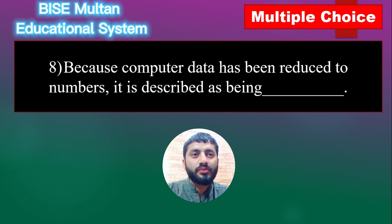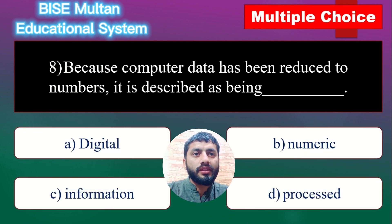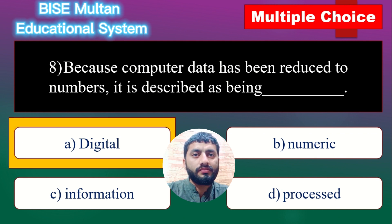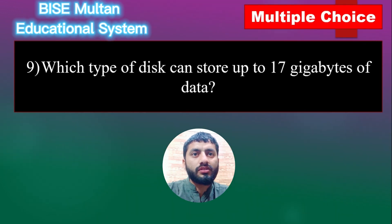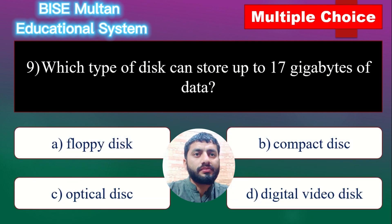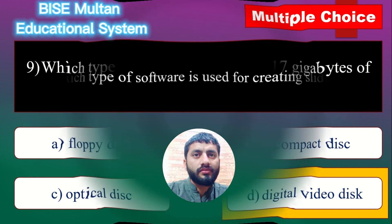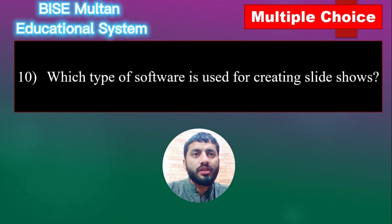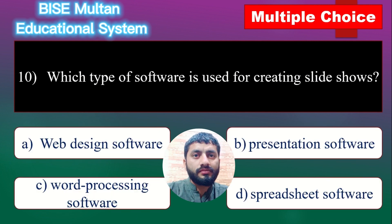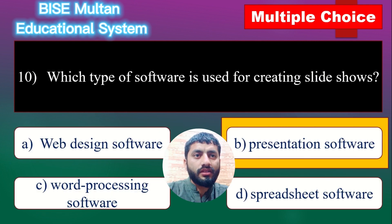Question 8. Because computer data has been reduced to numbers, it is described as being blank. The answer is Digital. Question 9. Which type of disk can store up to 17 gigabytes of data? The answer is Digital Video Disk. Question 10. Which type of software is used for creating slide shows? The answer is Presentation Software.